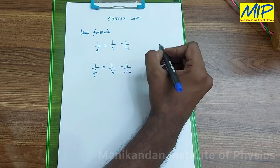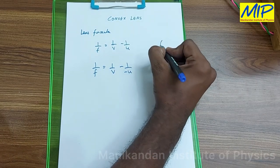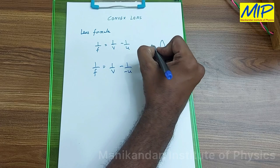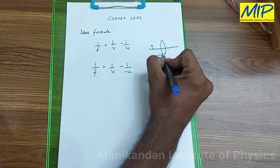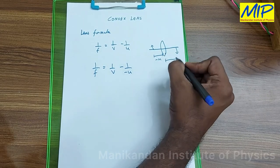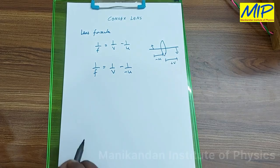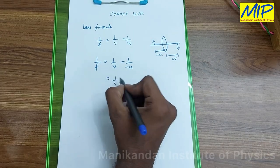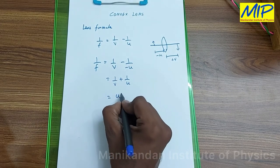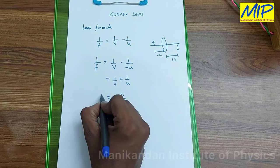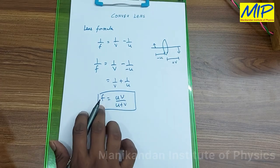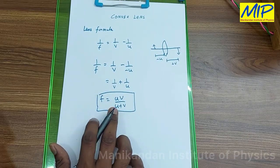Since the object is placed on the left side of the lens, u is negative, and the image formed on the right side of the lens gives a positive v. Solving this, we get 1/v + 1/u, which gives f = uv / (u + v). This is the focal length formula for the given convex lens.